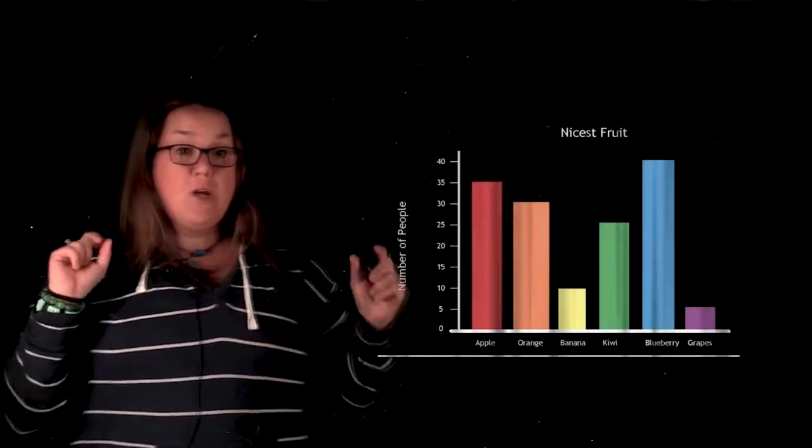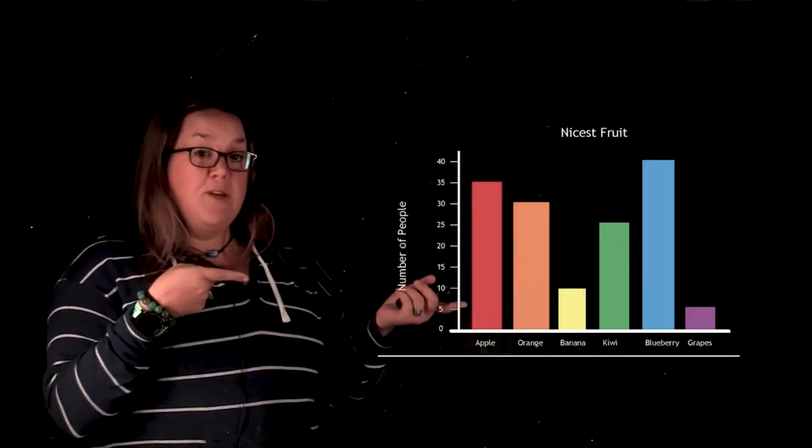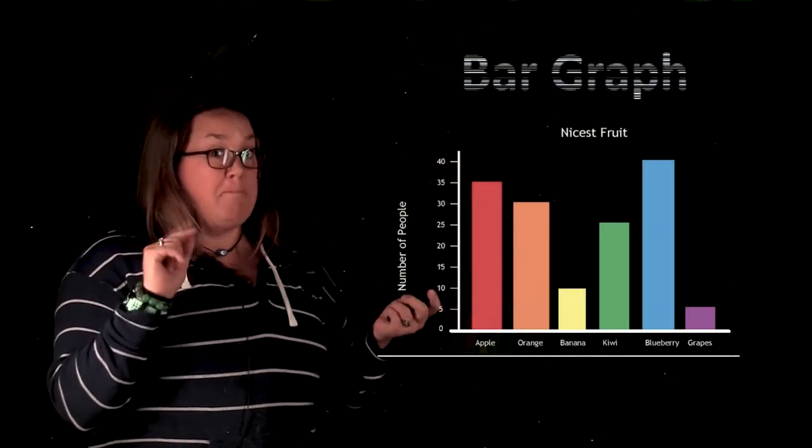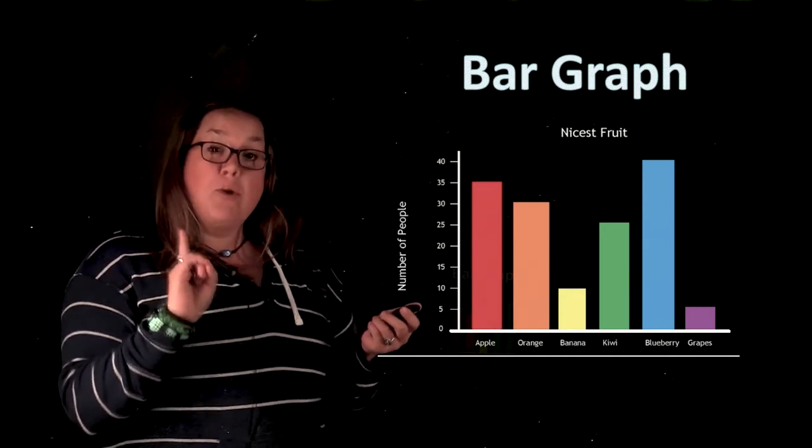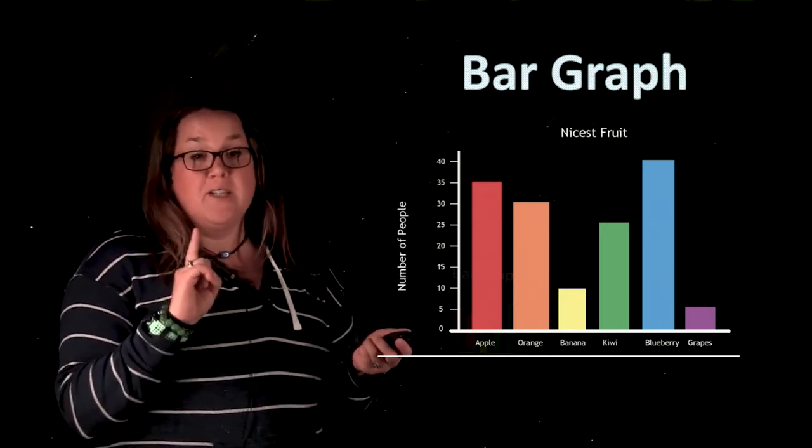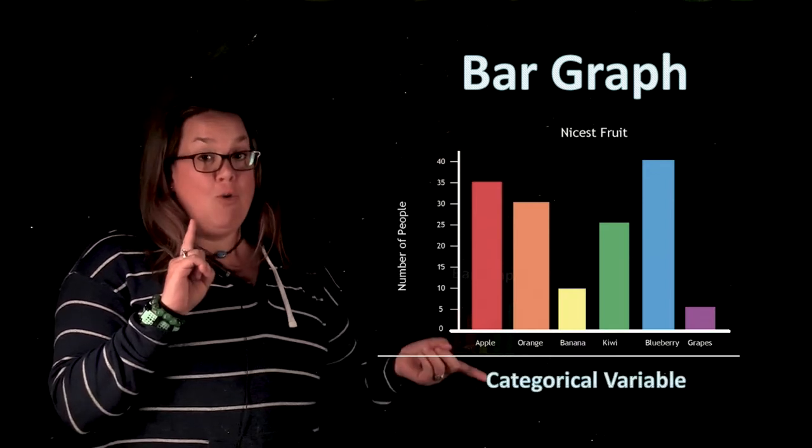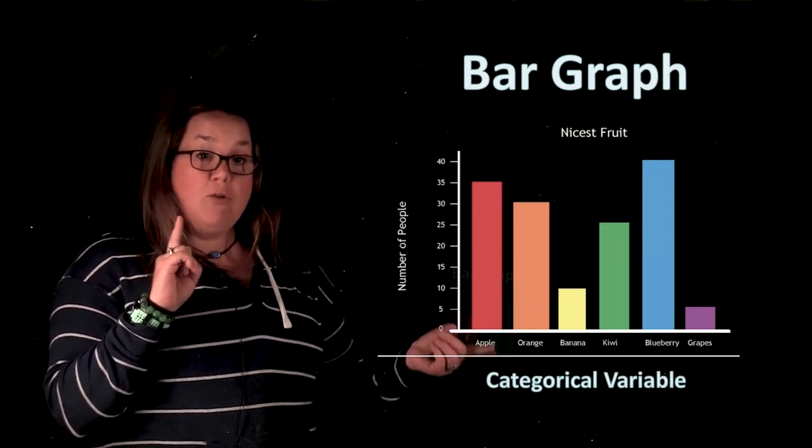So if you remember, that's a type of descriptive statistic because it's just describing a group. So here is our first graphical display. Do you know what it's called? A bar graph. A bar graph is called a bar graph because it's displaying categorical data. So this is a categorical variable.